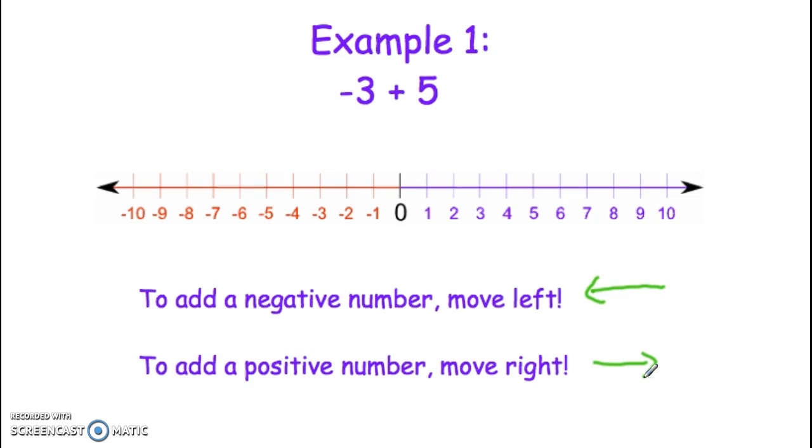Anytime you start on a number line, we always start at 0. That's our origin, that's where we begin. So if I want to add negative 3 plus 5, I start at 0 and then I move to the negative 3. You can either write negative 3 like this with an arrow or you can just start at negative 3.